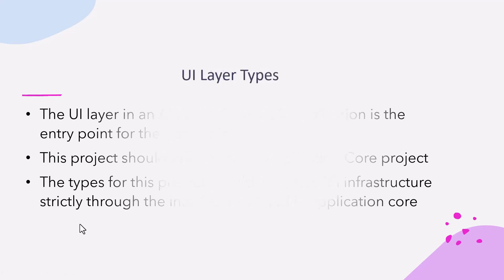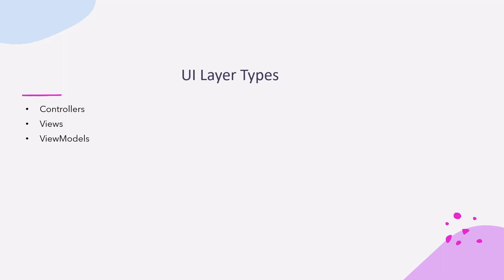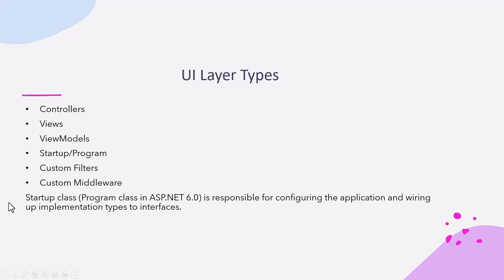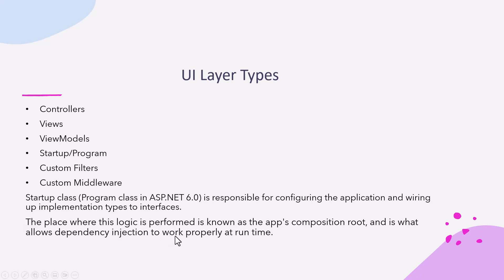The UI layer types are controllers, views, and view models, which are very commonly used in ASP.NET MVC Core, as well as startup or program class, custom filters, and custom middleware. The startup class — or just the program class in ASP.NET 6 — is responsible for configuring the application and wiring up implementation types to interfaces. The place where this logic is performed is known as the app's composition root, and is what allows dependency injection to work properly at runtime.